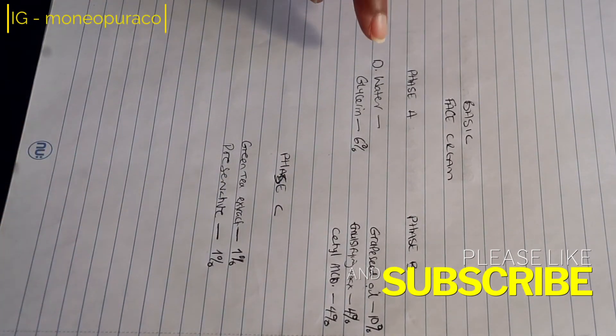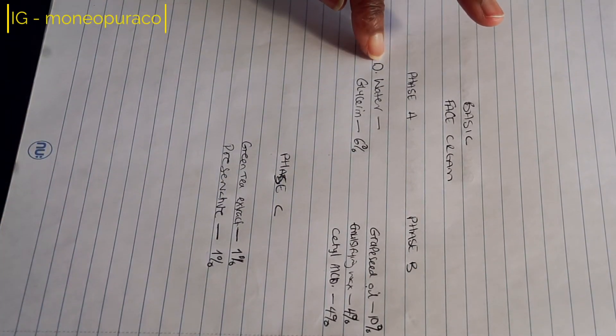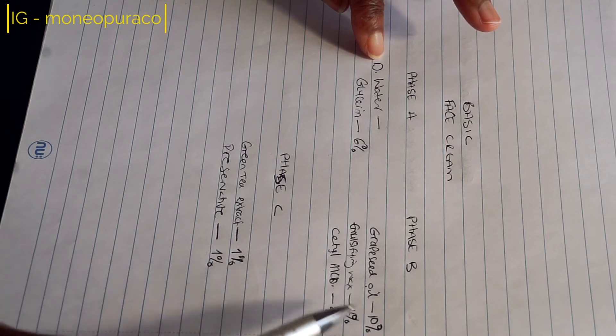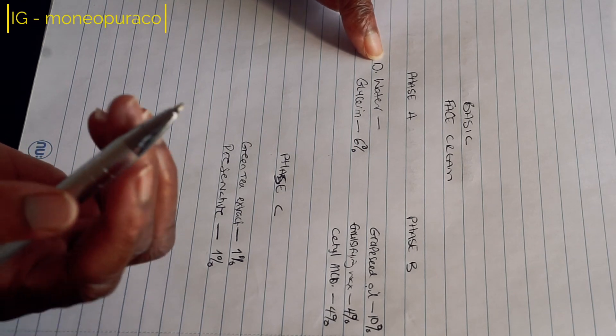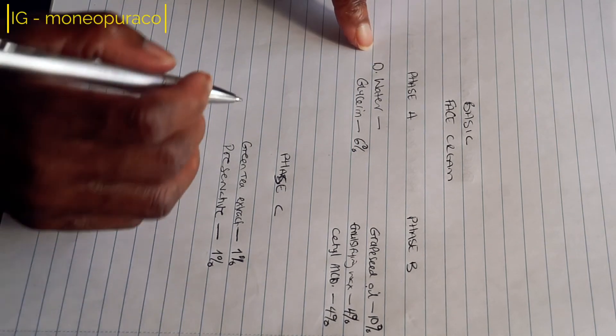For us to be able to get the percentage for our water phase, all we need to do is take these numbers away from 100, and that'll give us our distilled water percentage. That will bring us to 74%.